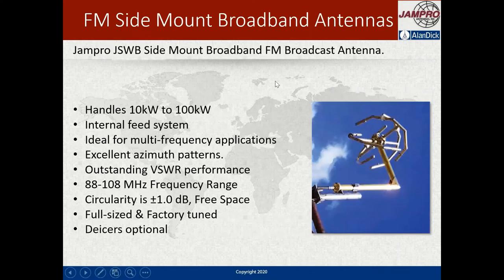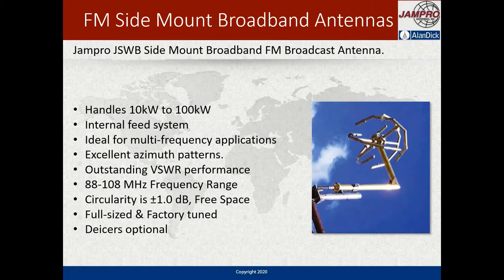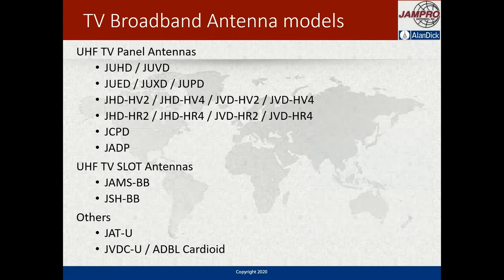The JSWB side mount antenna is a very high quality antenna that can handle very high power — even a single element can handle 30 to 40 kilowatts. It's designed to be a side mount, so you only need one per level rather than four elements around a tower as with a panel antenna. It still has a good omnidirectional azimuth pattern, very good VSWR performance, covers pretty much the whole FM band, and can work with de-icers as well.